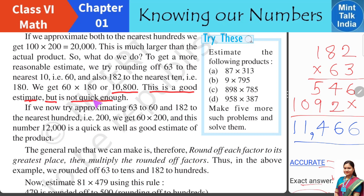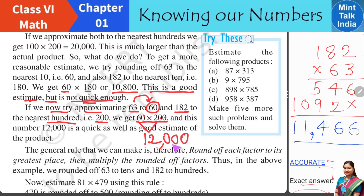But that multiplication is not quick enough — some children may struggle with 18 times 6. So let us try one more approximation: round 63 to the nearest tens giving 60, and round 182 to the nearest hundreds giving 200. Now multiply 60 and 200: 6 times 2 is 12, and then three zeros, giving 12,000. This is also very close to the correct answer of 11,466, and it is derived very quickly. So 12,000 is a good estimation of the product.